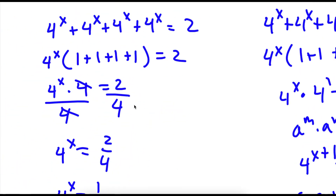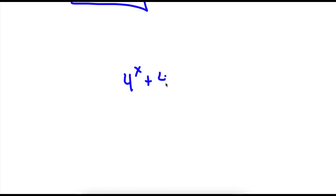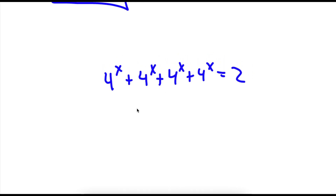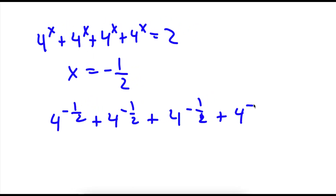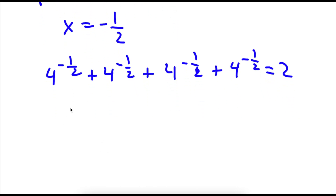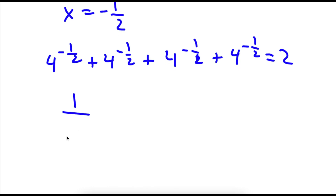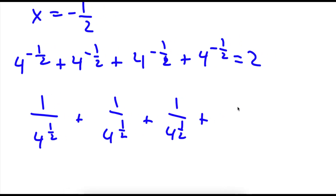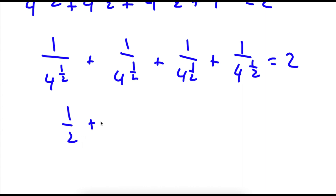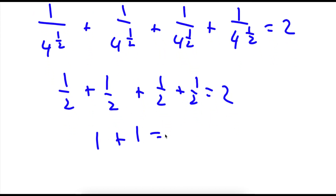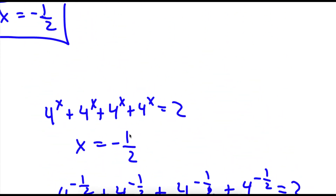Now to check my work, my original equation was 4 to the power of x plus 4 to the power of x plus 4 to the power of x plus 4 to the power of x is equal to 2. x is equal to negative 1 half, so now I have 4 to the power of negative 1 half four times equal to 2. This is the same thing as 1 over 4 to the power of 1 half, four times. 4 to the power of 1 half is the square root of 4, which is 2, so I have 1 half plus 1 half plus 1 half plus 1 half is equal to 2. 1 half plus 1 half is 1, and 1 half plus 1 half is 1, so 1 plus 1 equals 2. And 2 is equal to 2, so our solution is right.